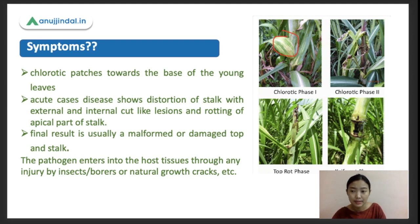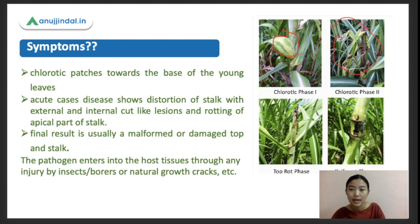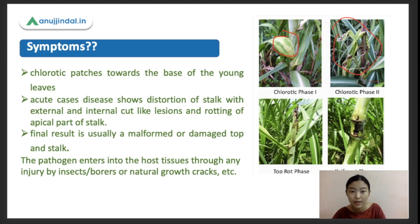The disease has a few phases. In the chlorotic phase, there will be mostly discoloration of the plants - first in the young leaves and then slowly over the whole plant. In the top rot phase or knife cut phase, in acute cases there will be distortion in the stalk of the sugarcane, dealing mostly in the apical portion where rotting will also start. Eventually they will form a malformed or damaged top or stalk.